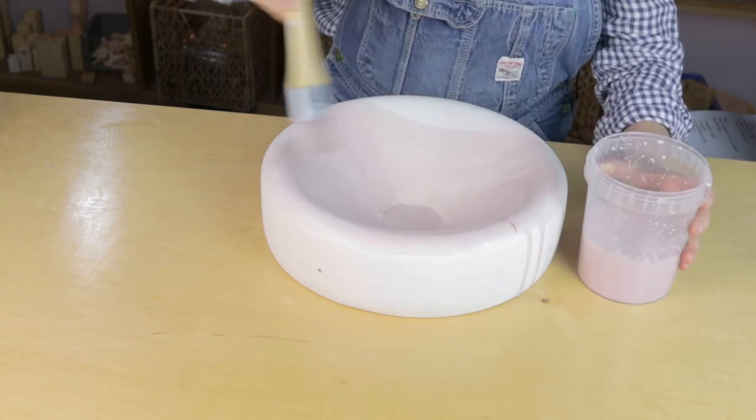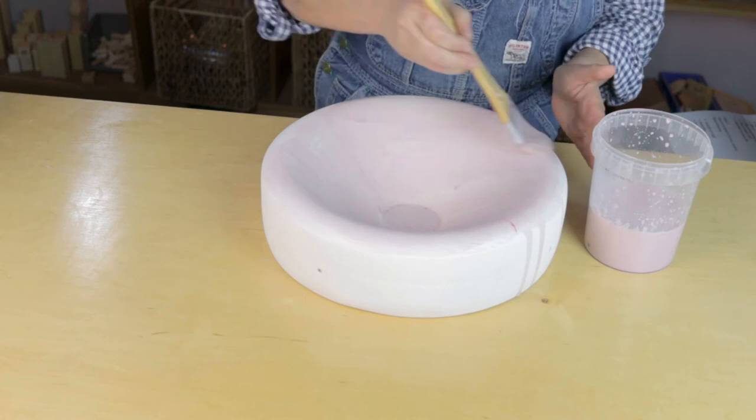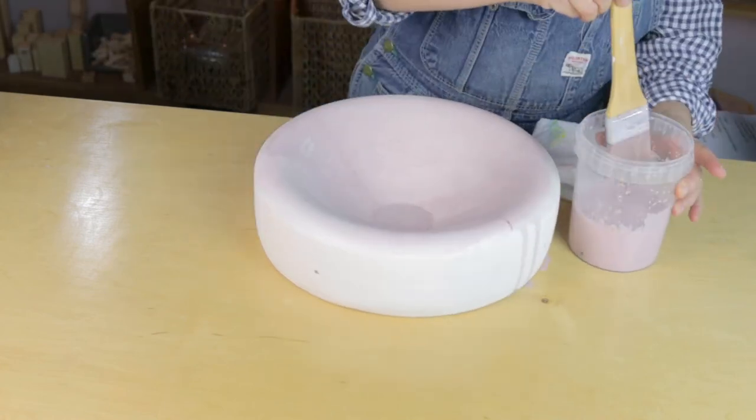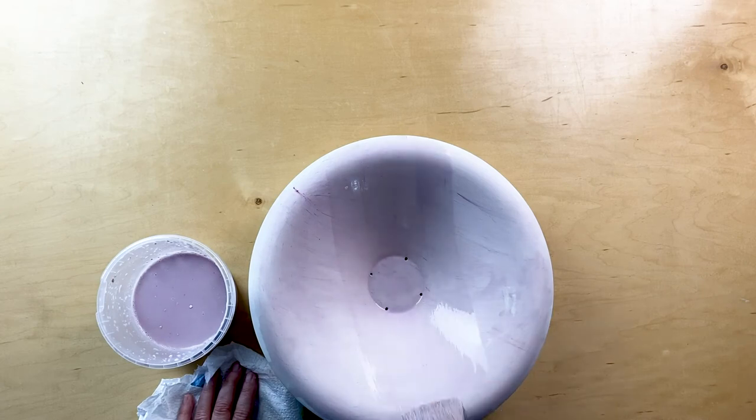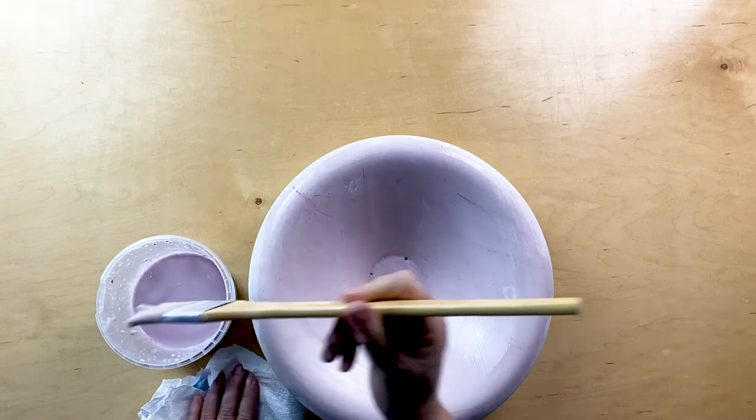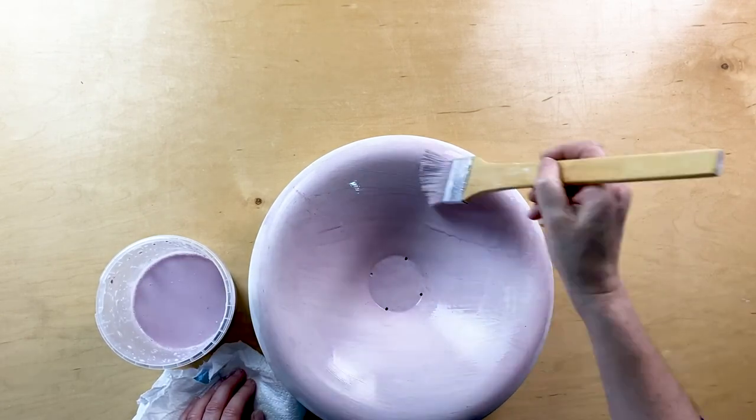The reason why we put five layers of Primer is to give you good coverage, and the reason why we go in different directions is to eliminate as many possible brush strokes from your mold's surface so that it won't transfer onto your glass.